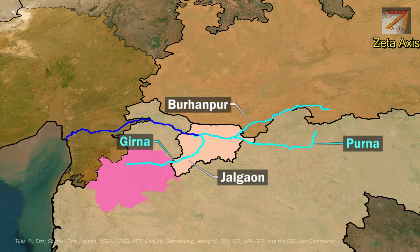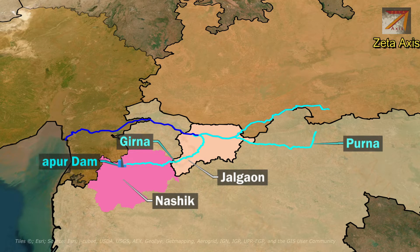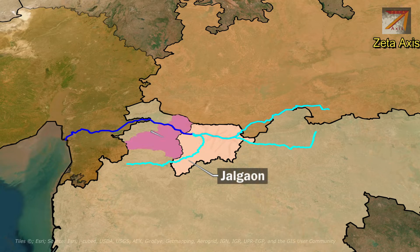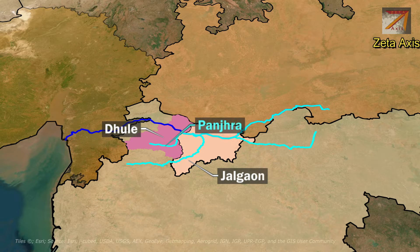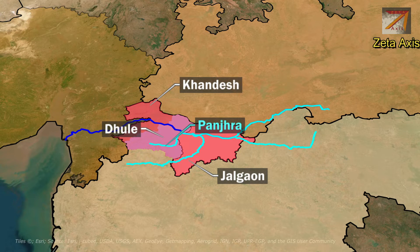Girna River originates in Nasik district of Maharashtra and flows through Jalgaon district to join Taapti River. Chanakpur Dam and Girnaara Dam are constructed on Girna River. On the borders of Jalgaon and Dhul district, Panjra River meets Taapti River. Panjra River originates in Dhul district and flows through the Khandesh region of Maharashtra to meet Taapti River.